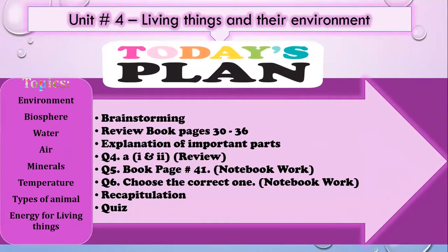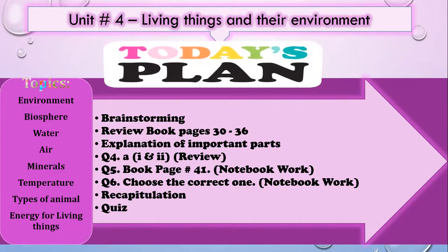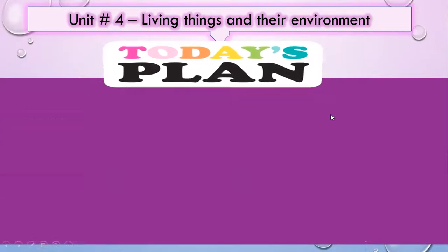After that we'll do today's work, which is question number five on book page number 41. It's about writing three points for the plants that have adapted to their surroundings. After that we'll do question number six, choose the correct one — notebook work — then recap and then quiz. Let's get started! Students, don't forget to follow the rules.